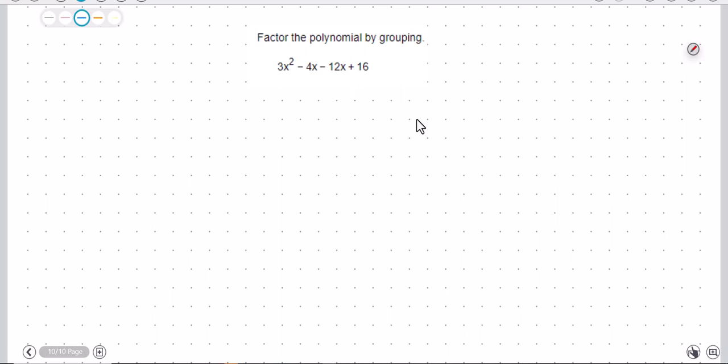All right, this says to factor this polynomial by grouping. So remember what you do is you put these as a group and then I can put a minus since that 12x is negative, but now I need to do a minus 16.